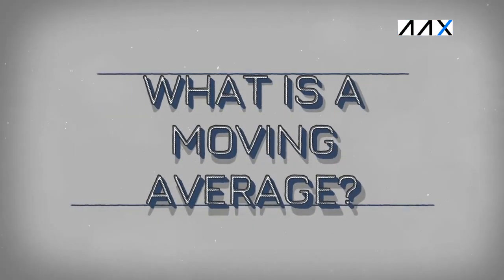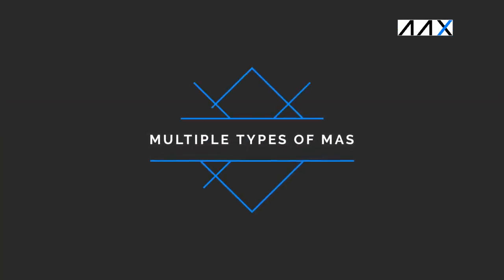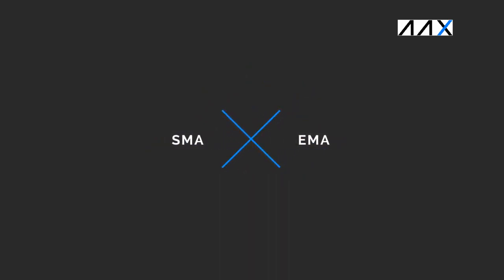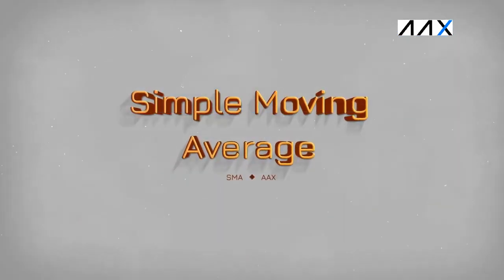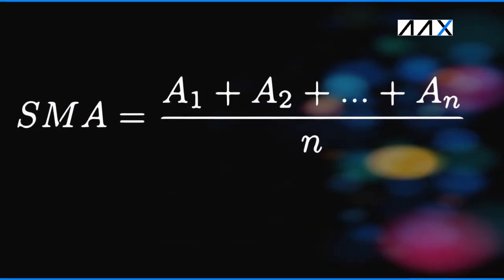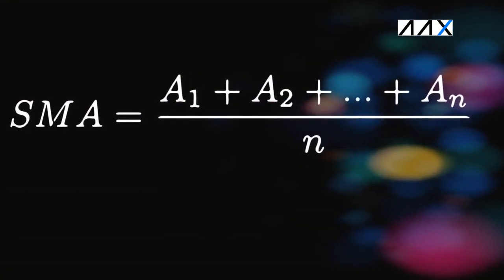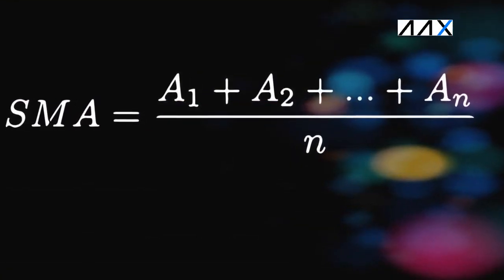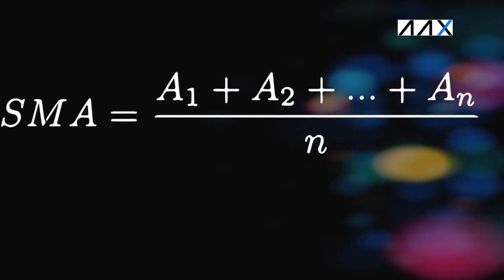So what is a moving average? There are two main types of moving averages. Firstly, you have the simple moving average, the SMA. And secondly, you have the exponential moving average, the EMA. The simple moving average is a technical analysis indicator which takes the average closing price of a cryptocurrency over the period of the simple moving average.